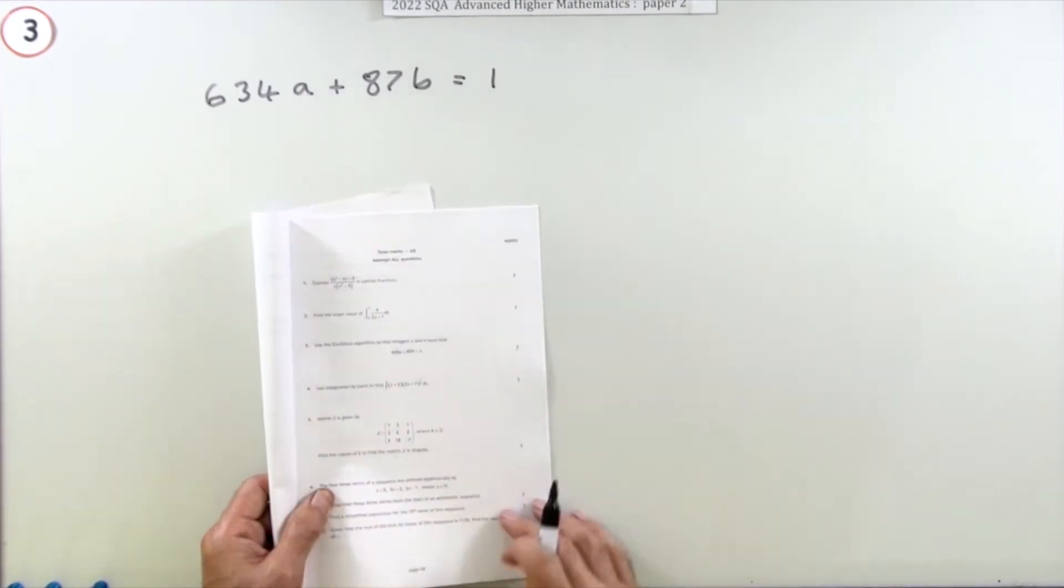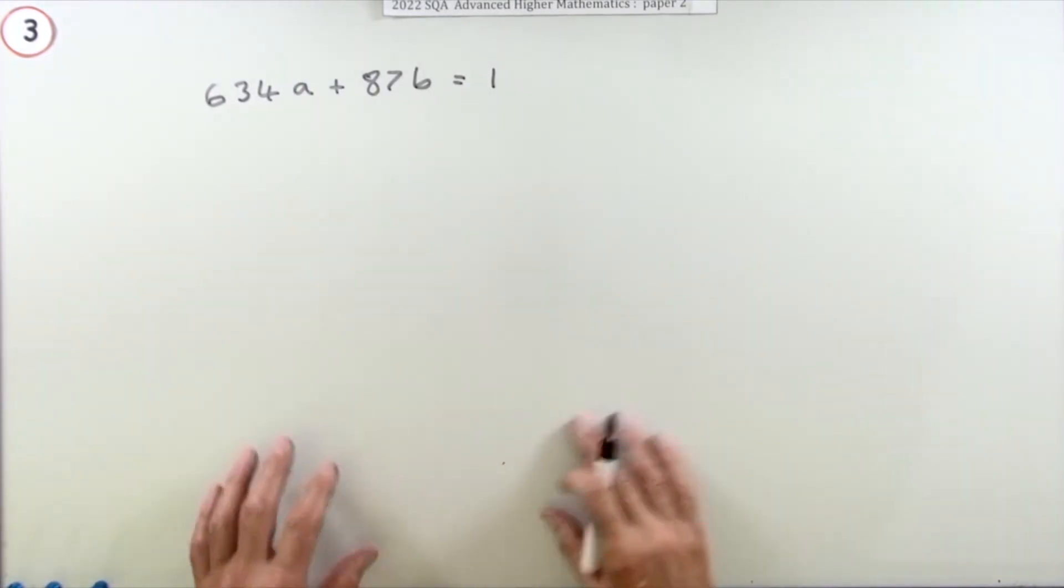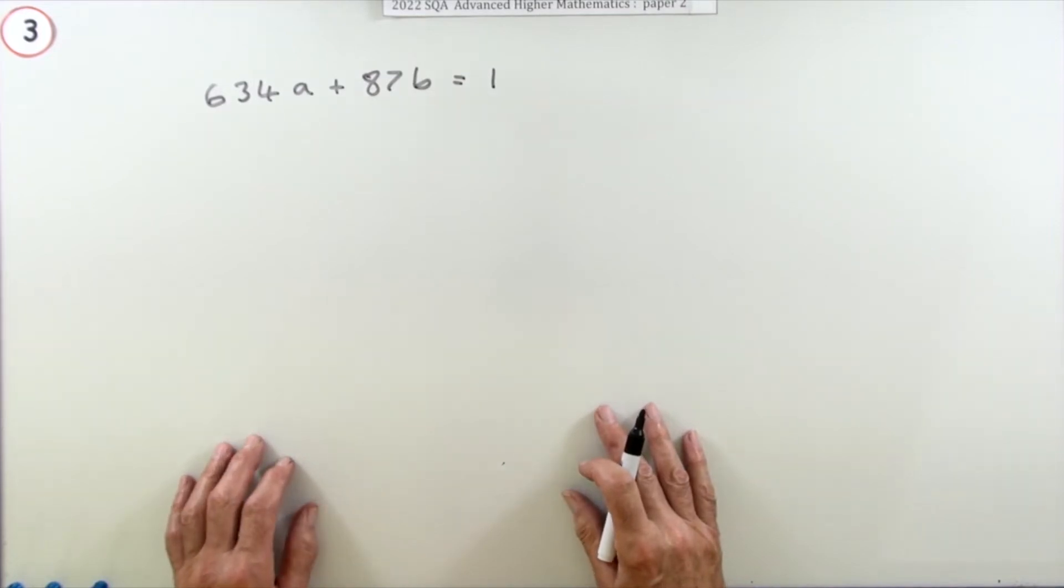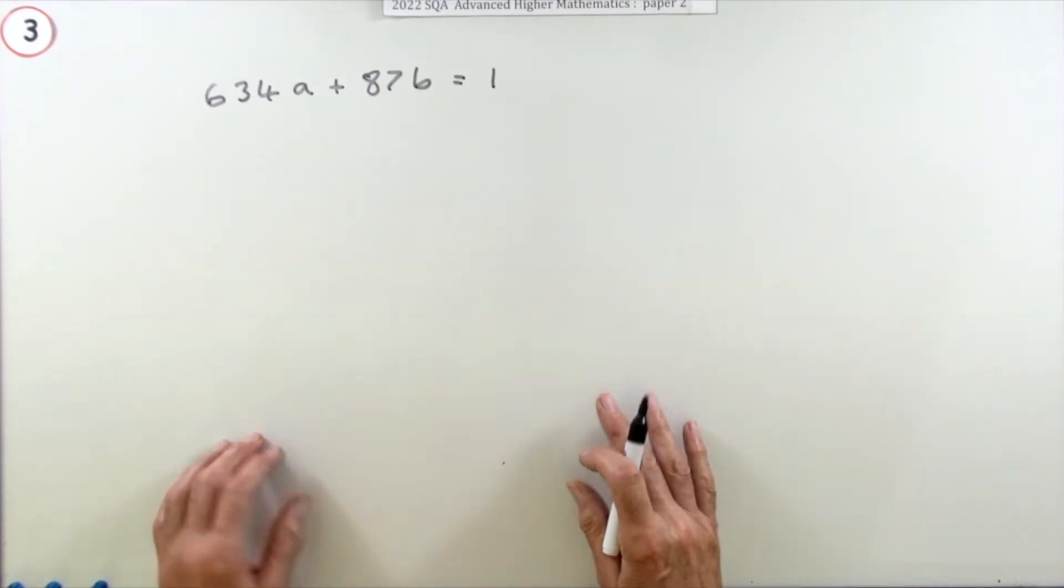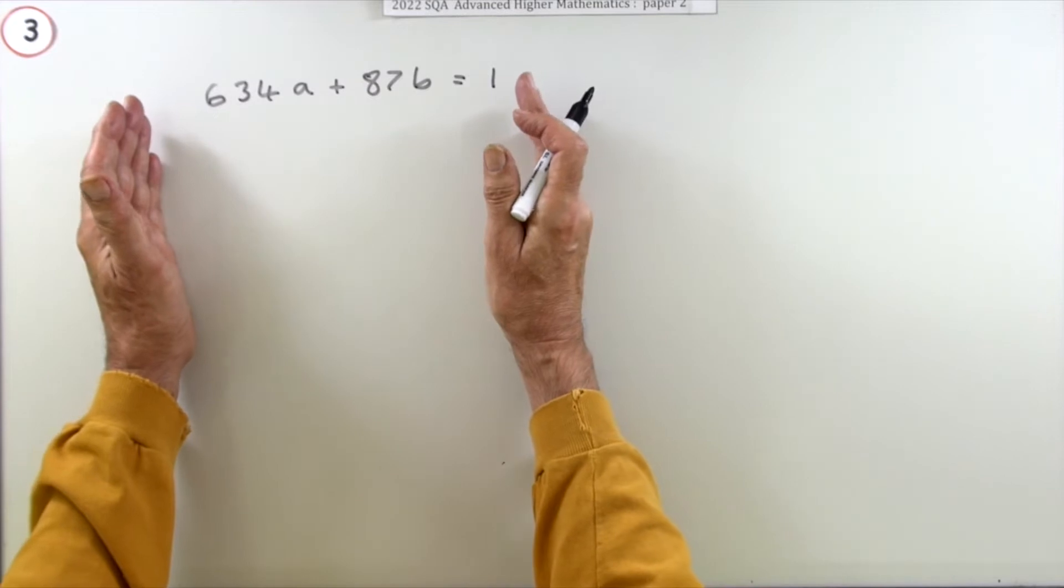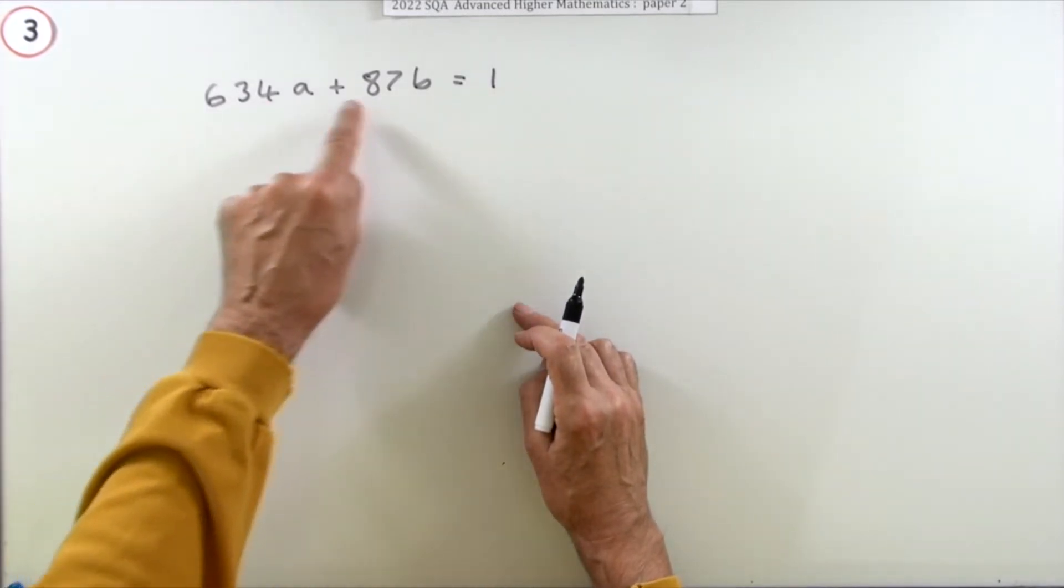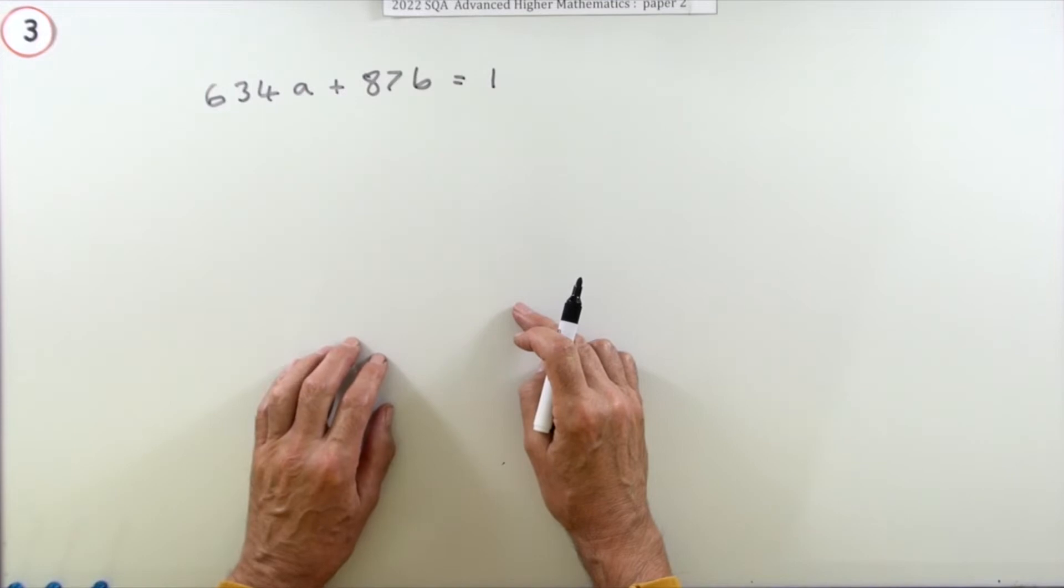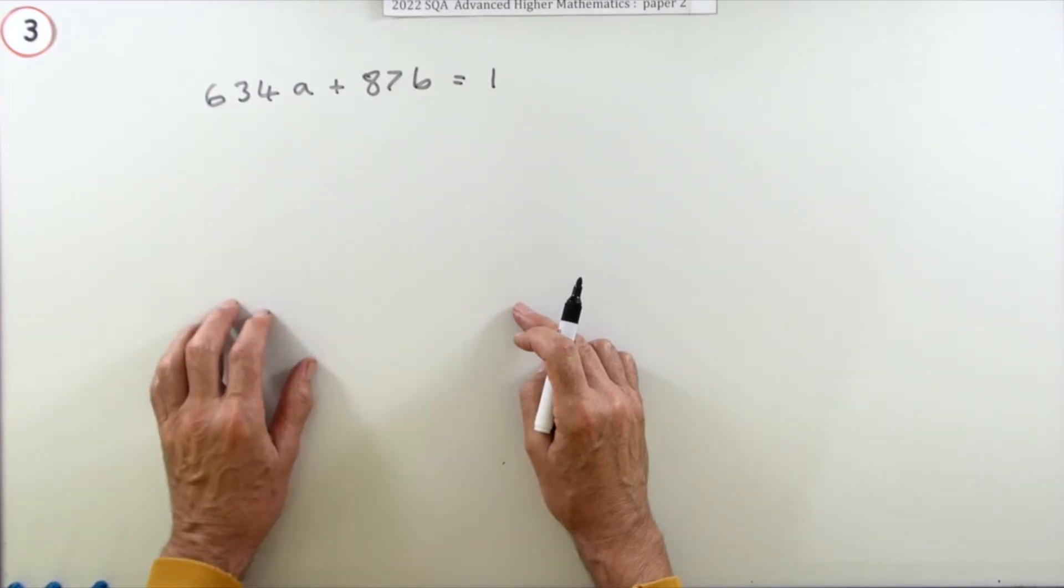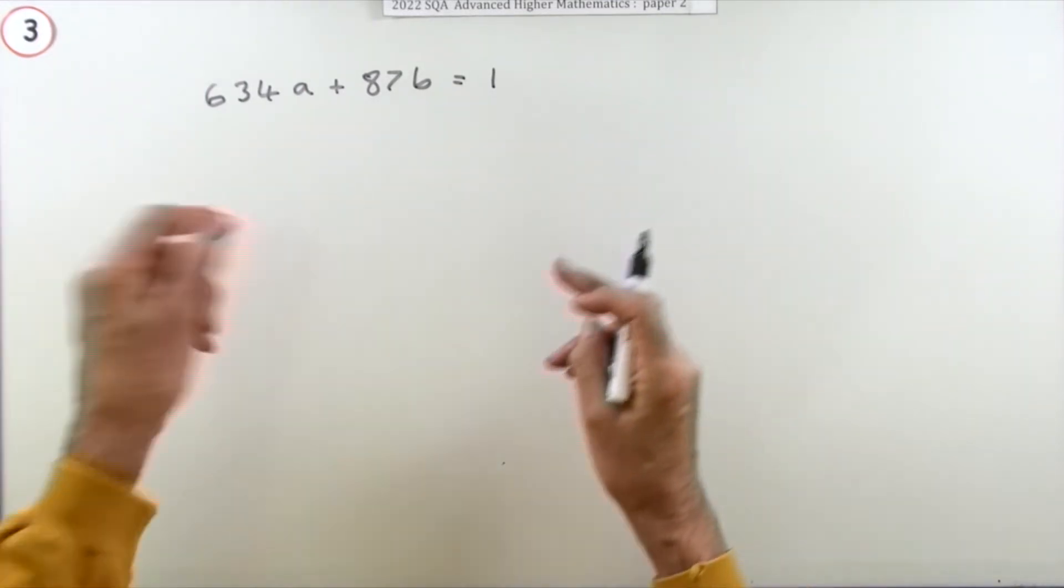That's actually quite a lot of arithmetic just for three marks because you're going to have to go through the Euclidean algorithm just to find the biggest number that will divide into 87 and 634, the greatest common divisor, and then you're going to have to work that backwards to find a and b.